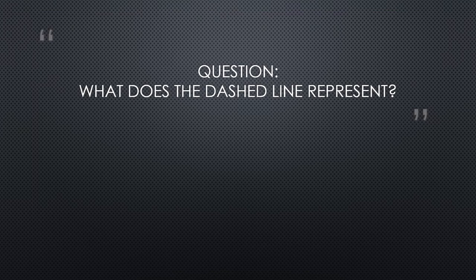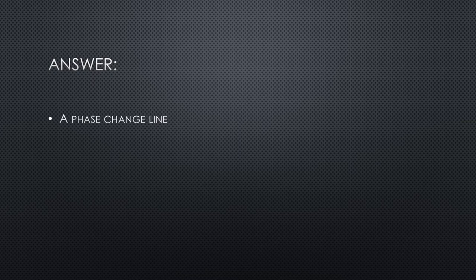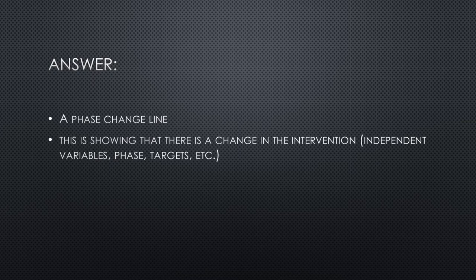Question: what does the dashed line represent? The answer is a phase change line. This is showing that there is a change in the intervention. This could be a change in the independent variable, the phase, the targets that are being run, etc. Fill in the answer: a phase change line.